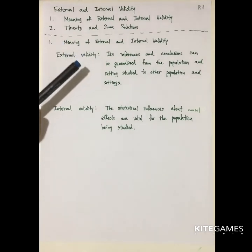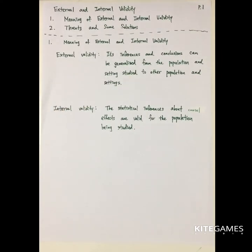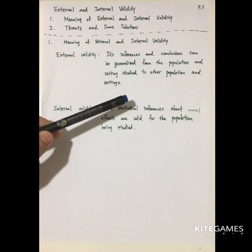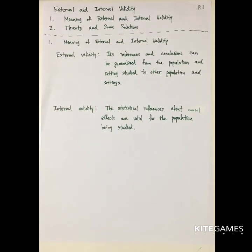The meaning of external validity is that the inference and conclusion can be generalized from the population to other populations. That means you finish the study of one population — can you use these results to explain the behavior of another population? For example, you collect the data of a university and compare whether the distance between the hall and the campus is a function of the student's GPA. Can these results explain the behavior of other universities? This is called external validity.